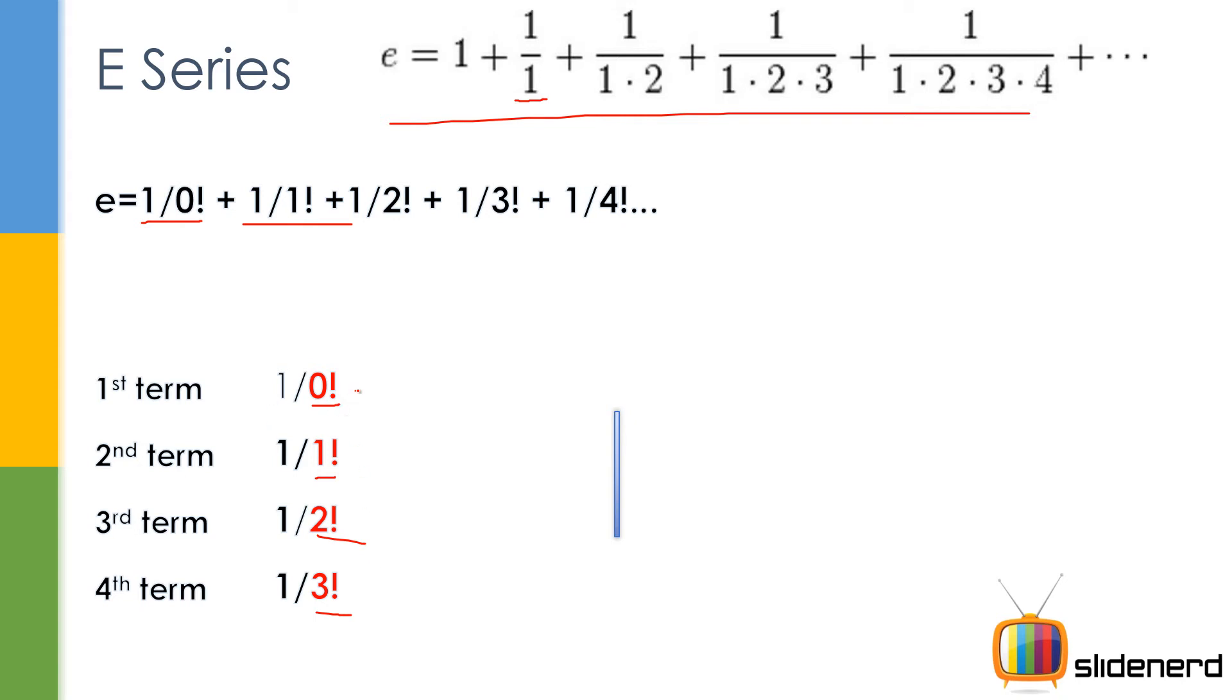adding each of these terms. First we have this, we add it, then we add it with this, then with this, and then with this, and we get the final value of e raised to 1. So let me show you what I mean.